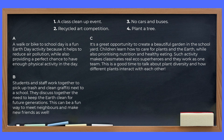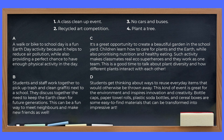C: It is a great opportunity to create a beautiful garden in the school yard. Children learn how to care for plants and the Earth while also prioritizing nutrition and healthy eating. Such activity makes classmates real eco-superheroes, and they work as one team. This is a good time to talk about plant diversity and how different plants interact with each other. D: Students get thinking about ways to reuse everyday items that would otherwise be thrown away. This kind of event is great for the environment and inspires innovation and creativity. Bottle caps, paper towel rolls, plastic soda bottles, and cereal boxes are some easy-to-find materials that can be transformed into impressive art.